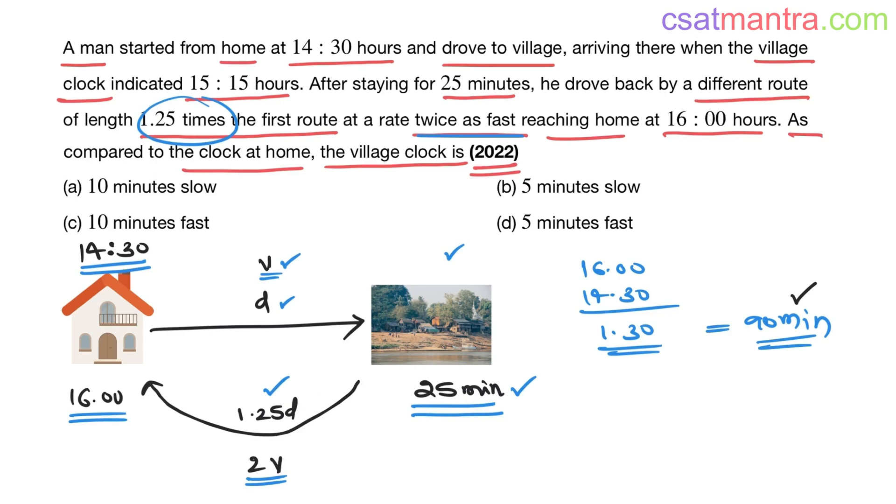This 90 minutes is the total time taken to reach the home. Time taken to travel this distance plus this distance would be 90 minus 25, that is equal to 65 minutes, because for these 25 minutes he didn't travel, he stayed there. Time taken to travel distance D plus time taken to travel distance 1.25D, that is equal to 65 minutes. We got this equation.